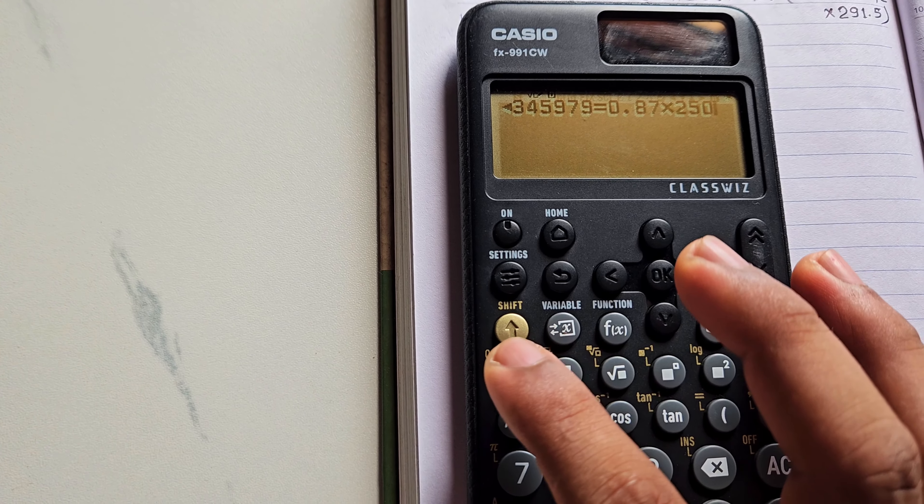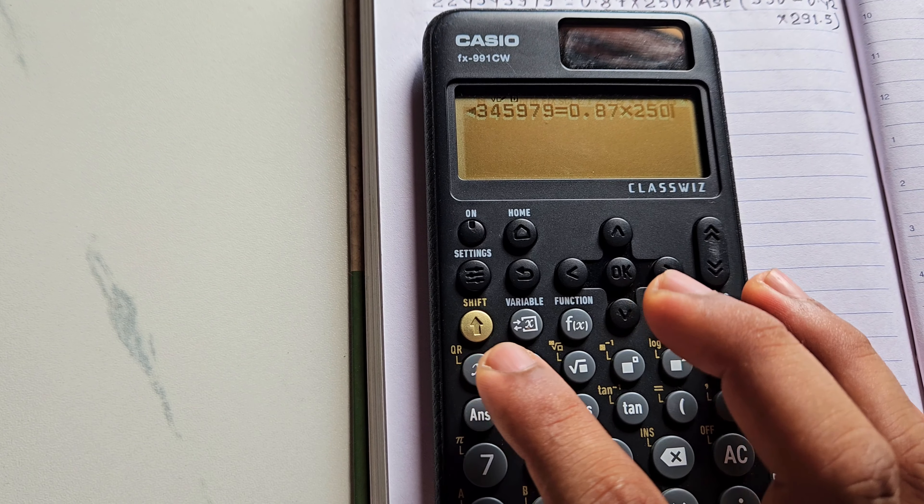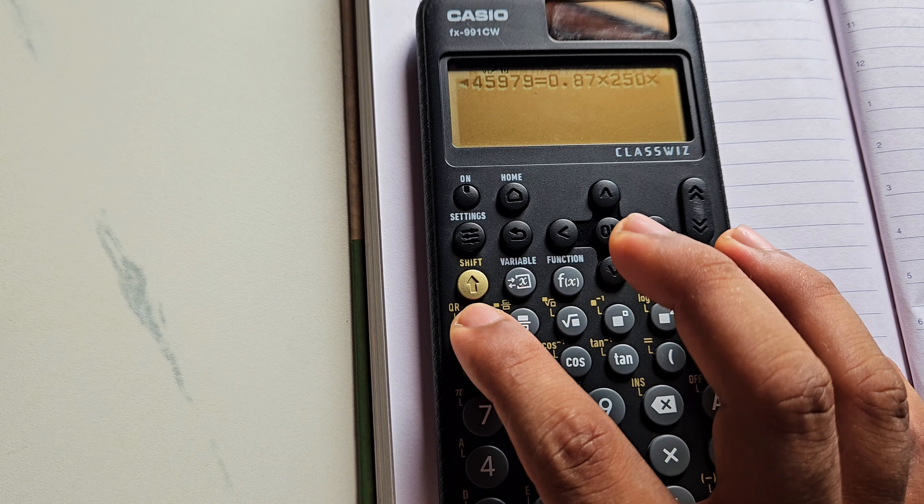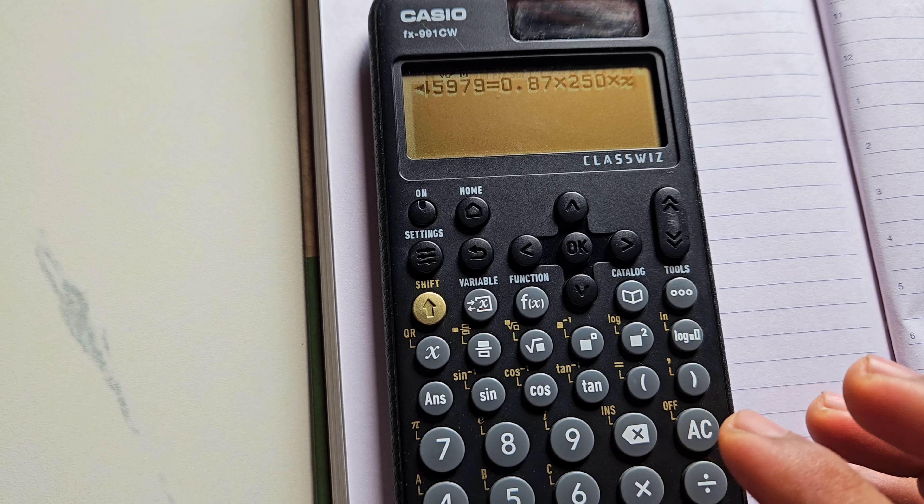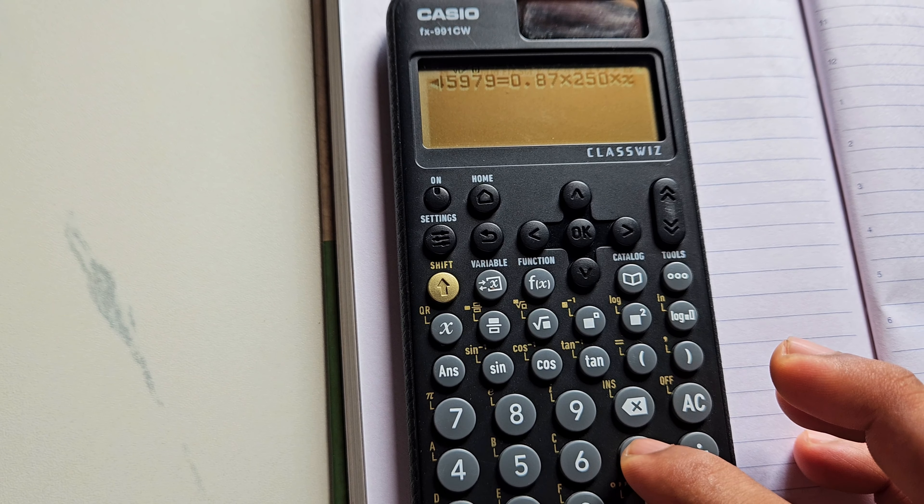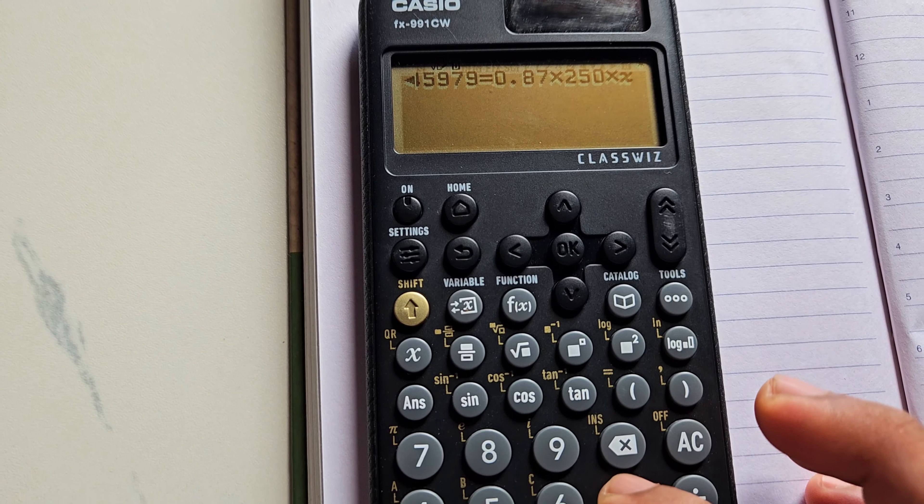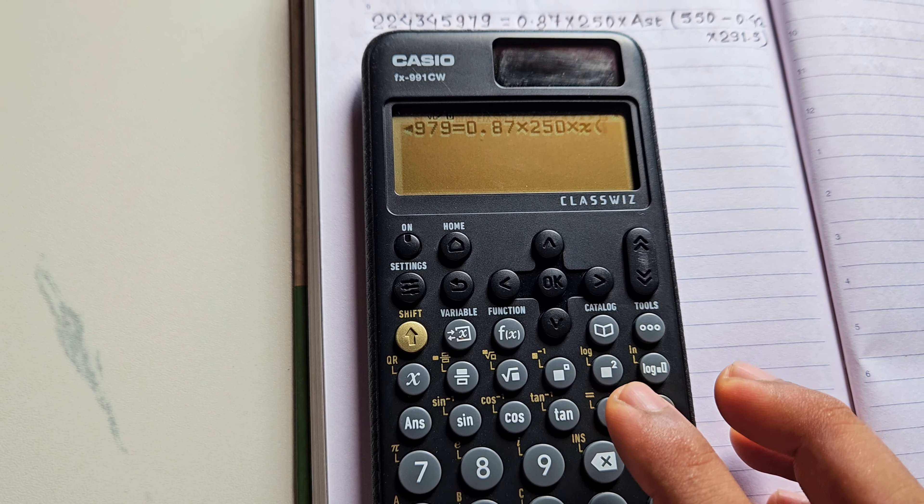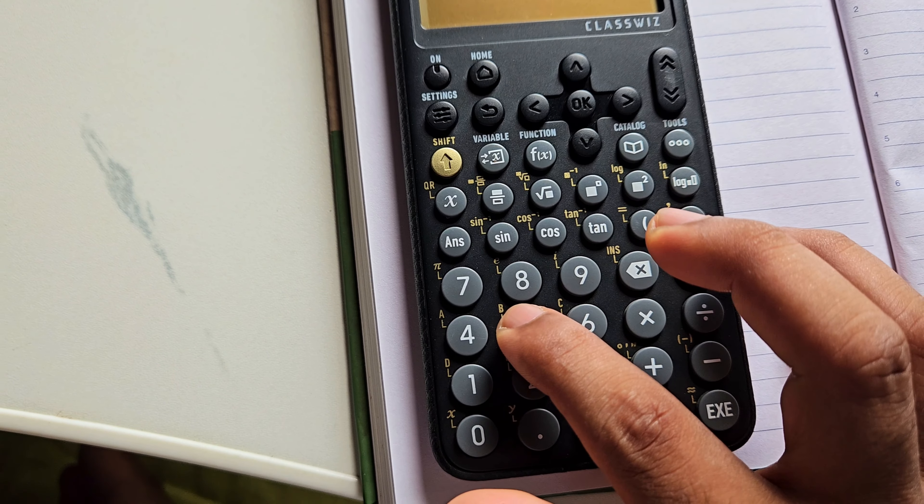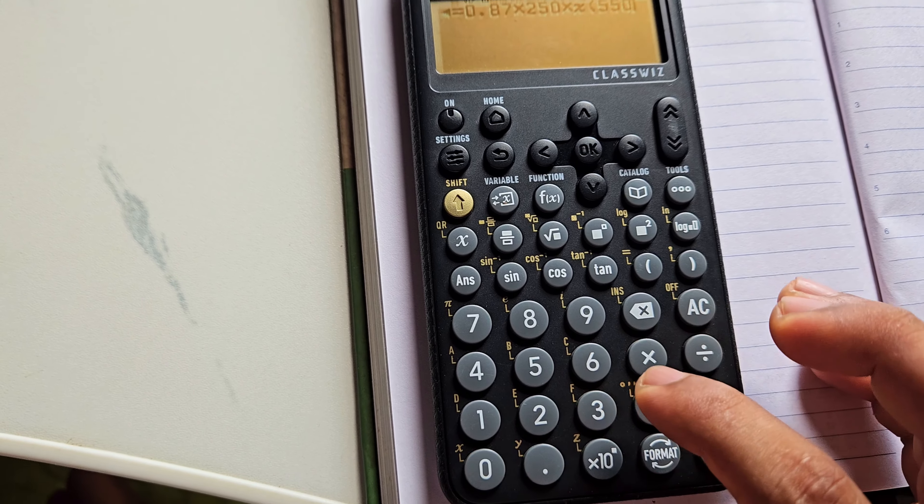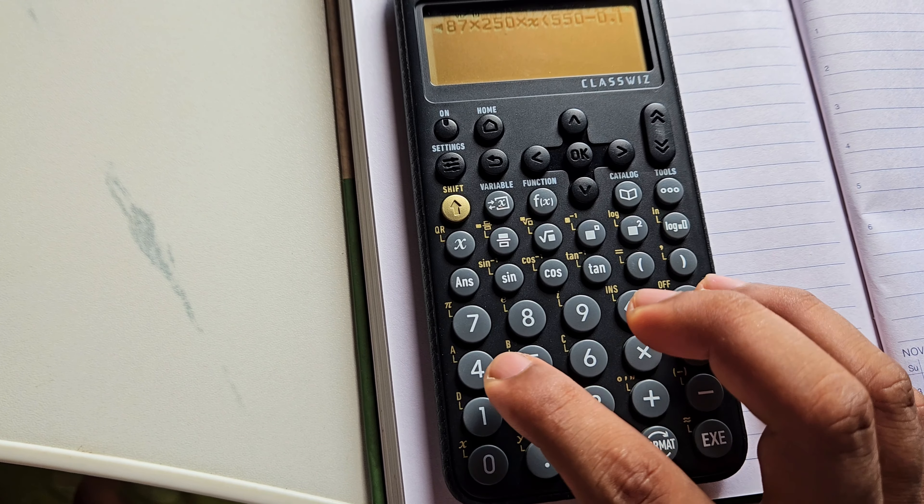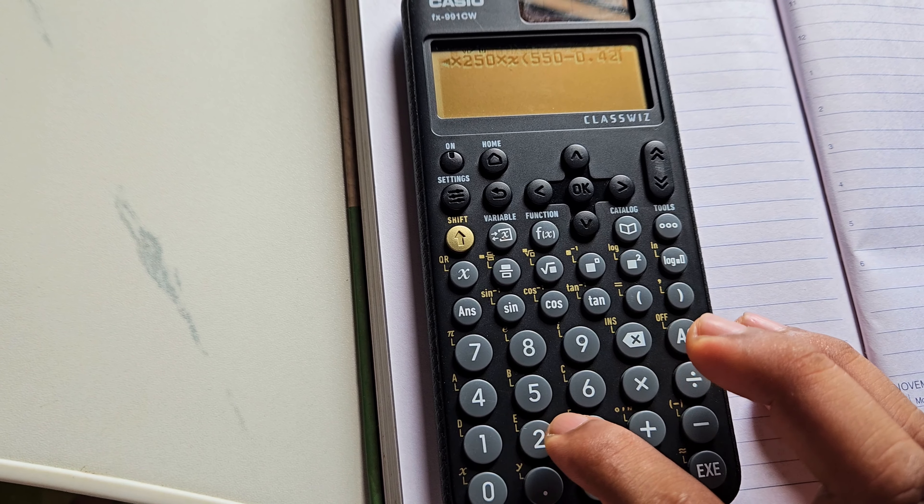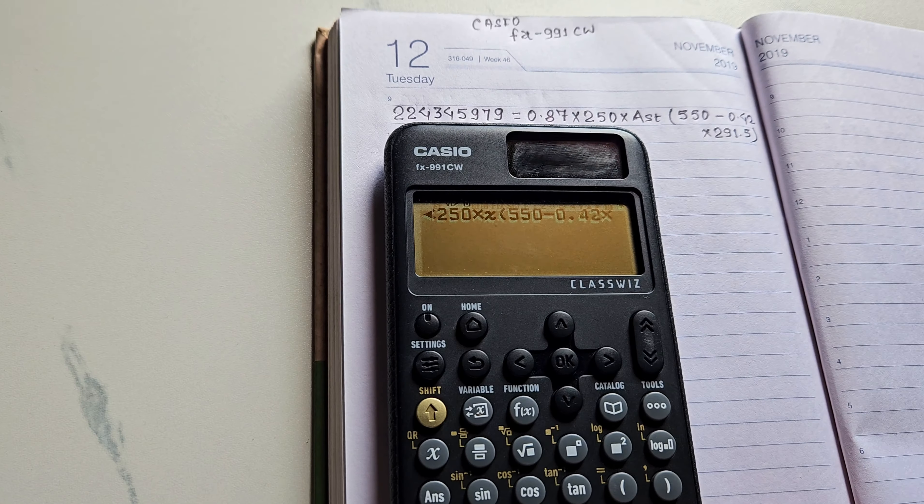So in the place of AST, we will be using this X. So I will put here multiply X, and then bracket. Before bracket you can use multiply sign also, or we can proceed without using the multiply sign. Just open the bracket and type the value 550, then minus 0.42 × 291.5.